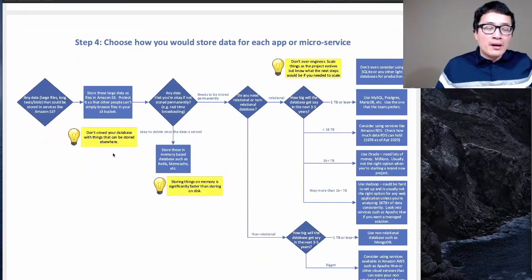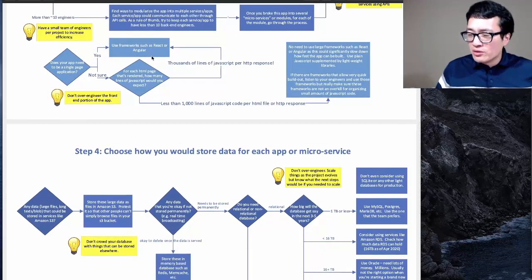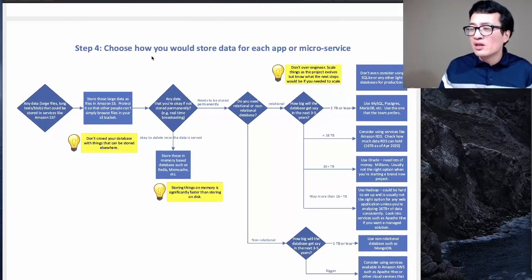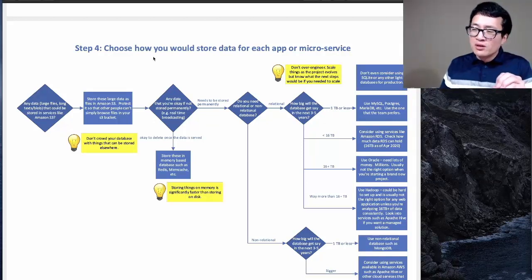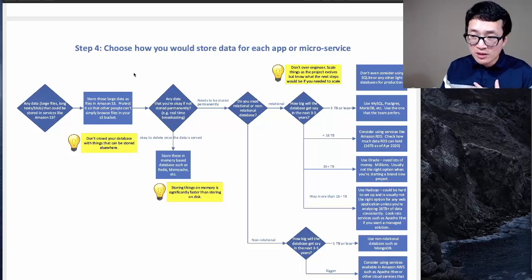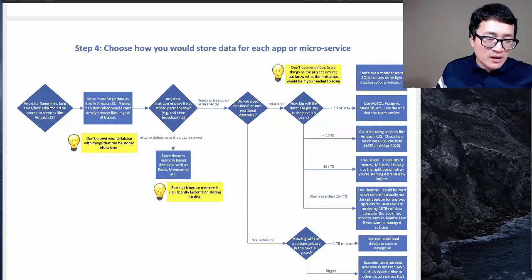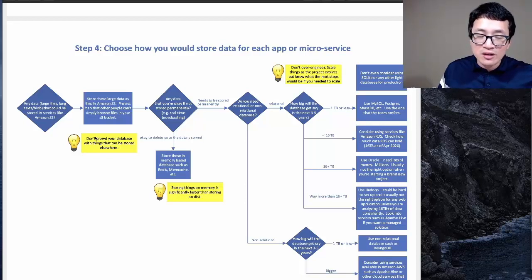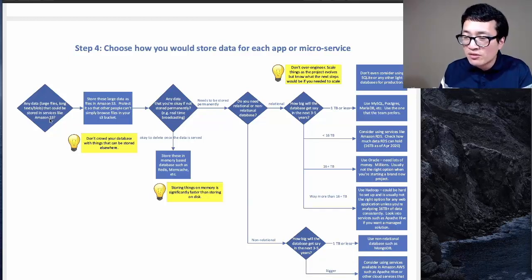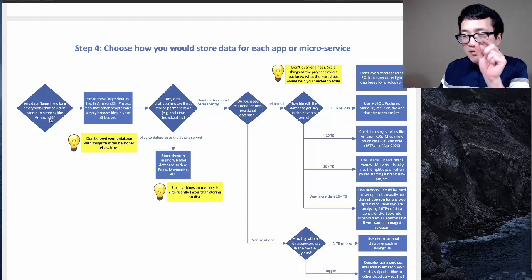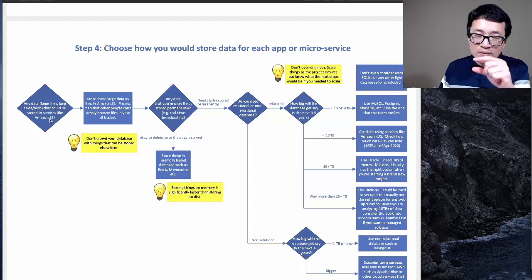Step four: now that we've figured out language and framework, for each app or microservice, think about where to store the data. First ask: Is there any large file data — long text, blobs — that could be stored in services like Amazon S3? The rule is: do not store large files in your database. It will slow things down and make your database too big. Store the files in S3 and simply store the link in your database.